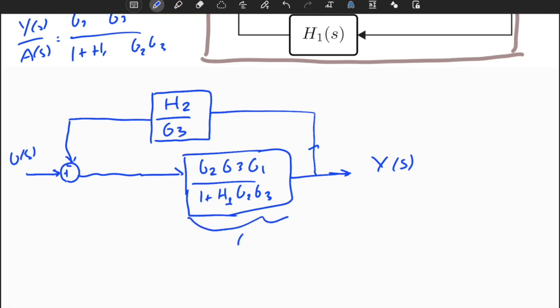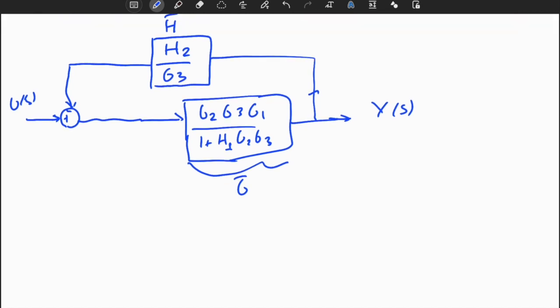Now this is a simple feedback structure. This is my g hat, this is my h hat. So y of s divided by u of s is equal to g hat divided by 1 plus g hat times h hat.